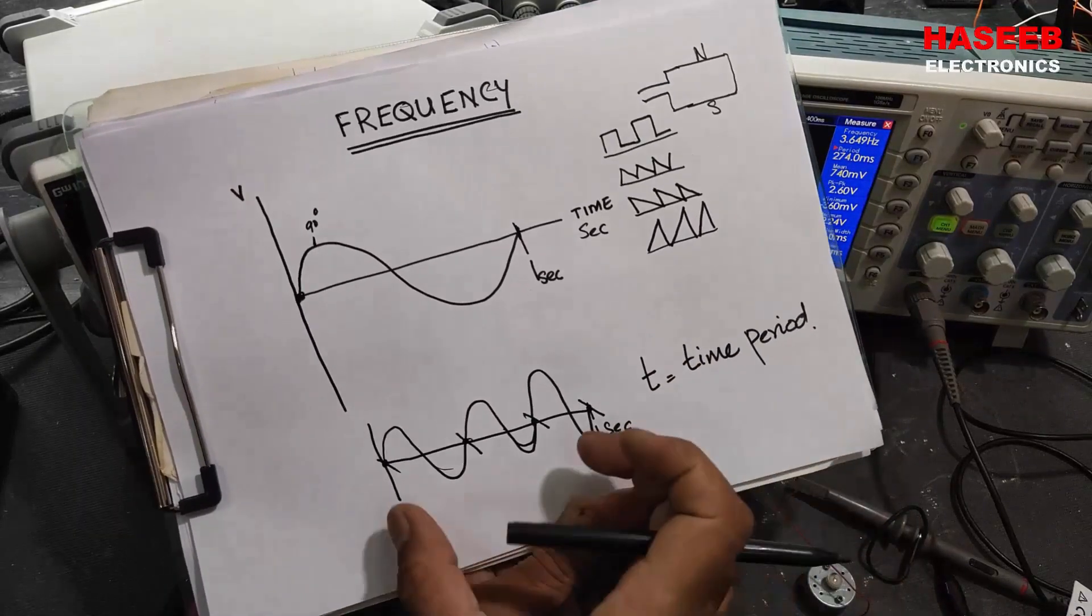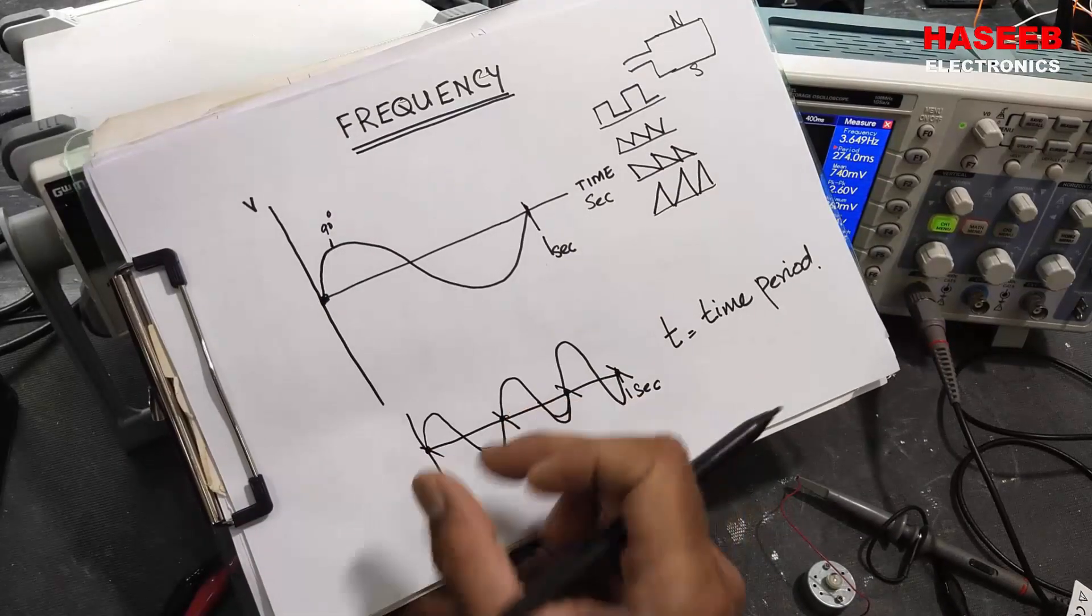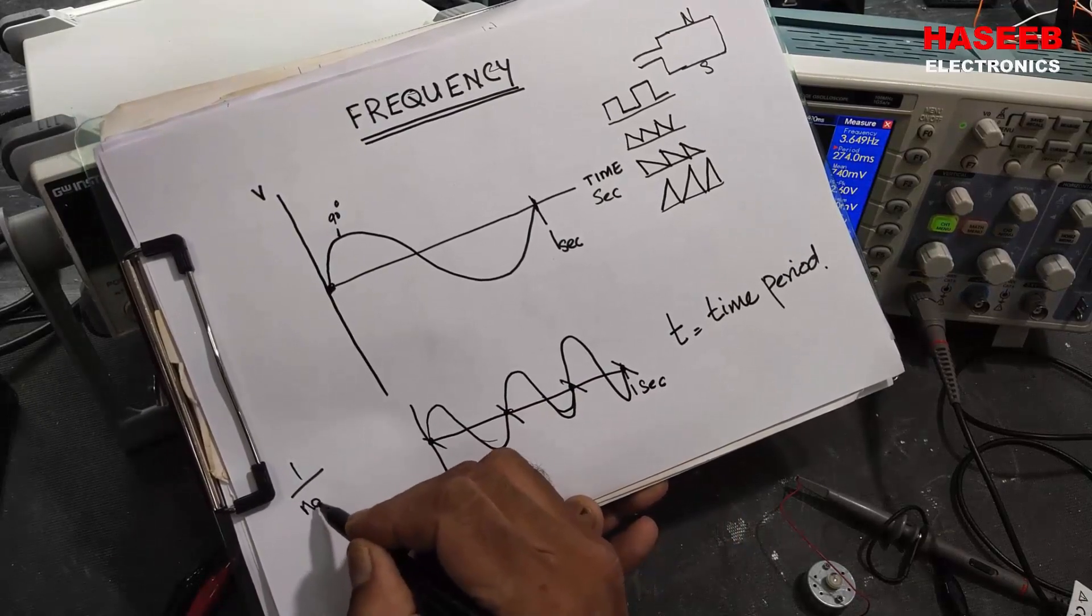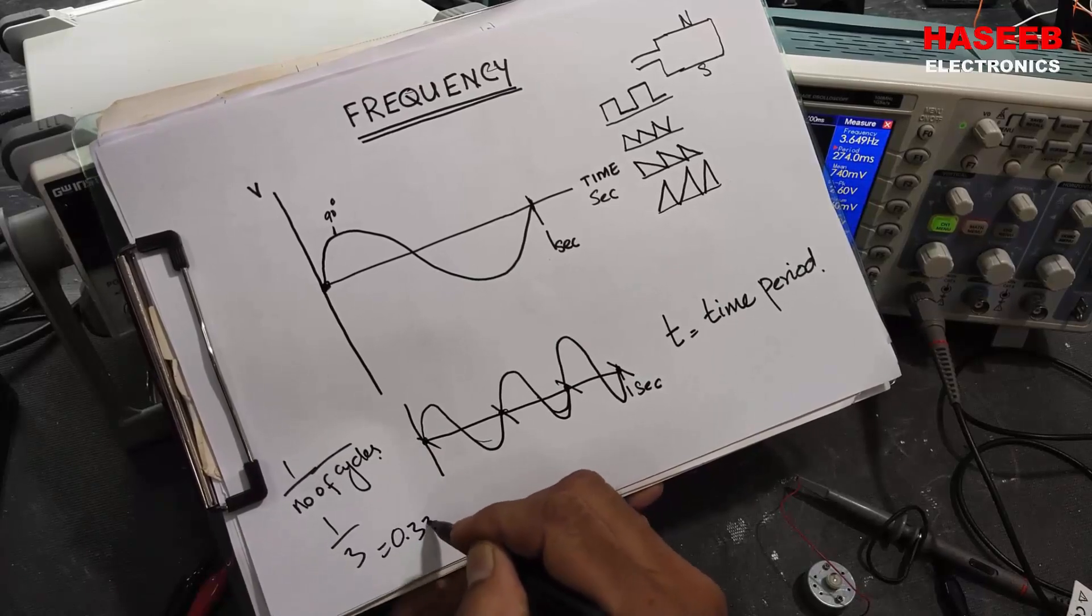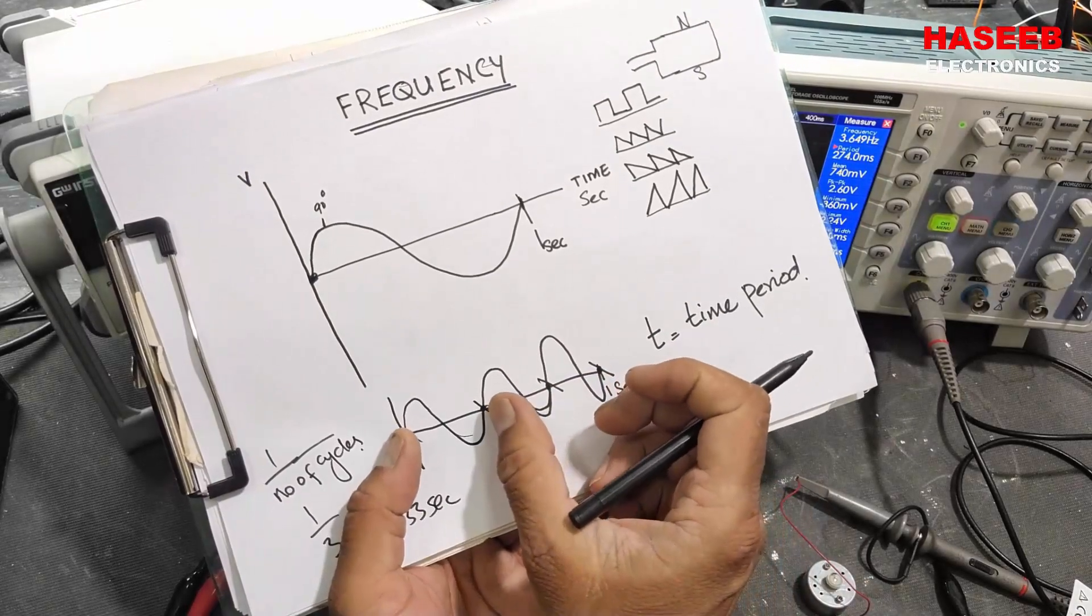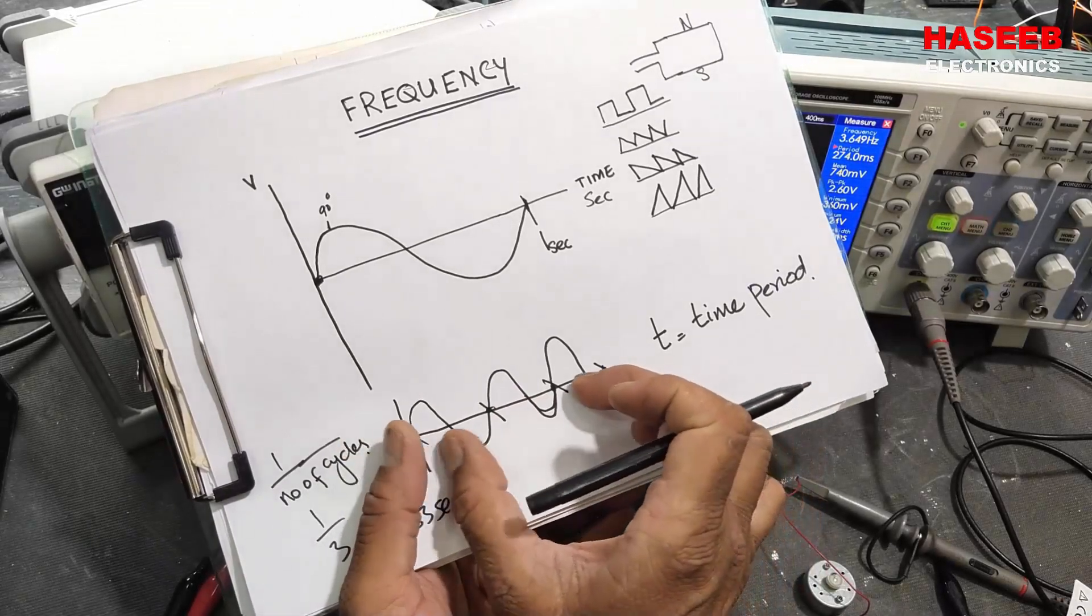But if we have repetition - three cycles in one second - each cycle will take one over the number of cycles: 1 over 3 is equal to 0.333 seconds for one pulse.